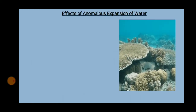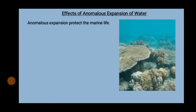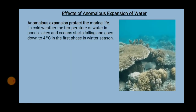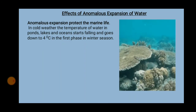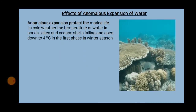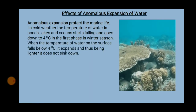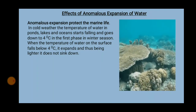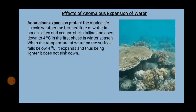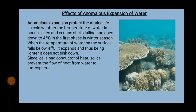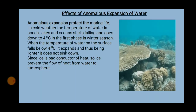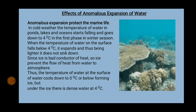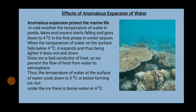Effect of anomalous expansion of water: Anomalous expansion protects marine life. In cold weather, the temperature of water in ponds, lakes and oceans starts falling and goes down to 4°C in the first phase of winter. When the temperature of water on the surface falls below 4°C, it expands and, being lighter, does not sink down. Since ice is a bad conductor of heat, ice prevents the flow of heat from water to the atmosphere. Thus the temperature of water at the surface cools down to 0°C or below, forming ice.